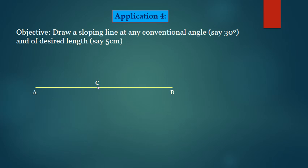Fourth application: draw a sloping line at an conventional angle, say 30 degrees, and of desired length, say 5 cm. Let us consider line AB we have.